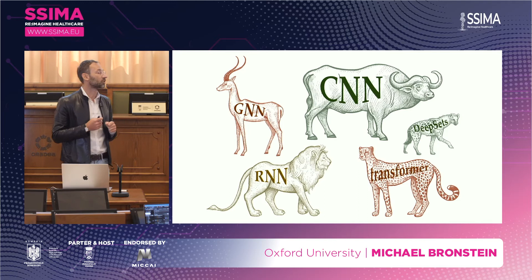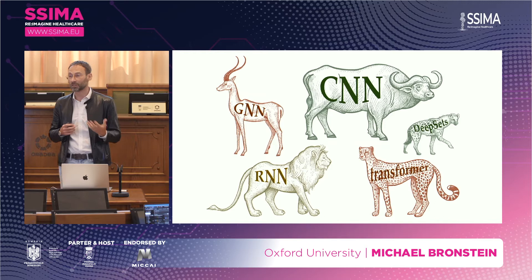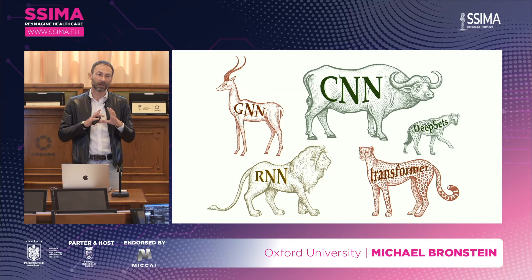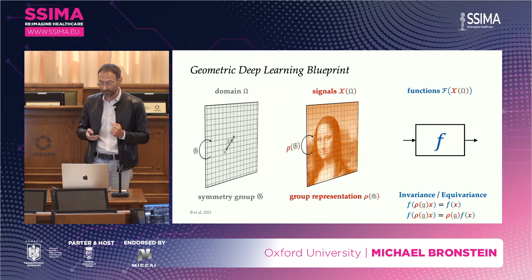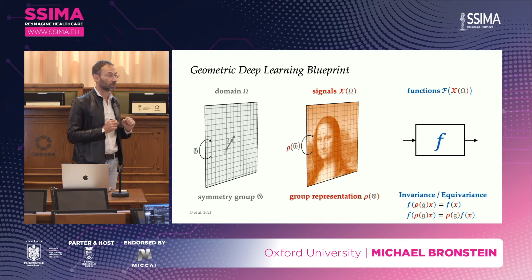In deep learning we also have a zoo of different things: convolutional neural networks, graph neural networks, recurrent neural networks, transformers, and so on. What is the standard model of deep learning? Can we unify them in the spirit of the Erlangen program through fundamental principles? We claim that such principles are the principles of symmetry, and we can write a very general blueprint of deep learning that follows the Erlangen program very closely.